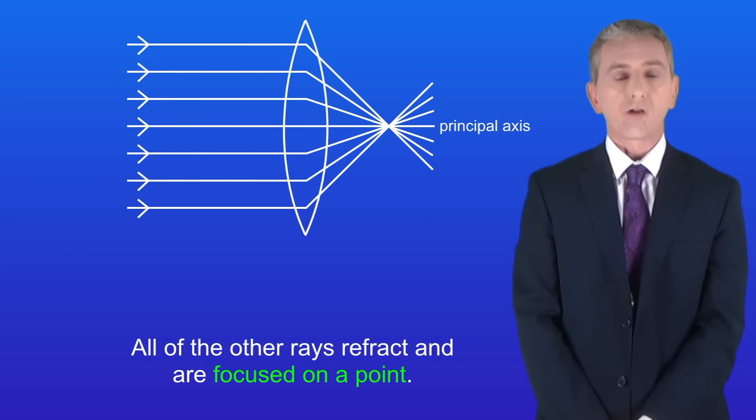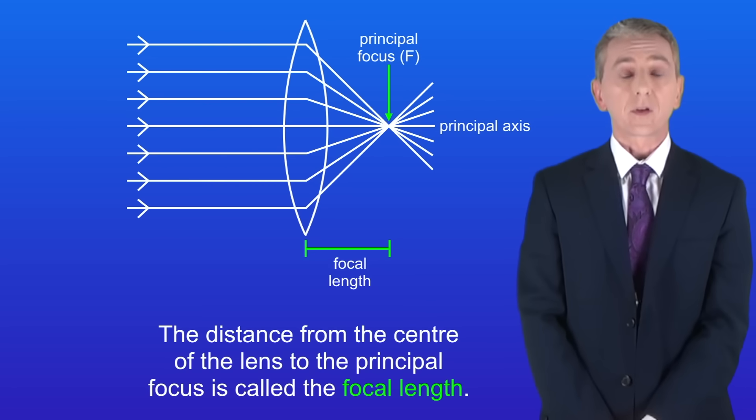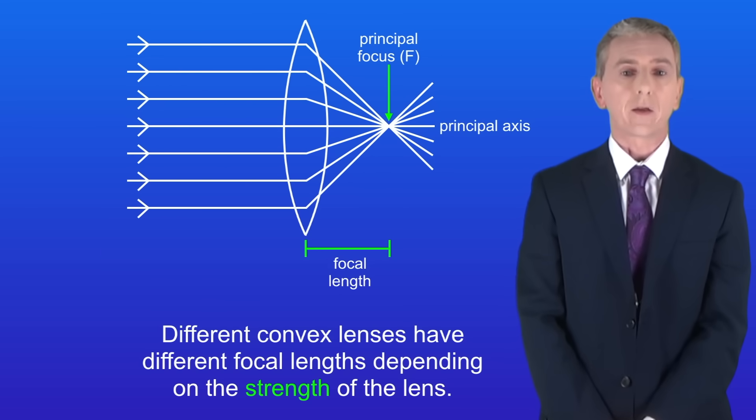All of the other rays refract and they're focused on a point. We call this the principal focus and that has a symbol capital F. The distance from the center of the lens to the principal focus is called the focal length. Different convex lenses have got different focal lengths depending on the strength of the lens.